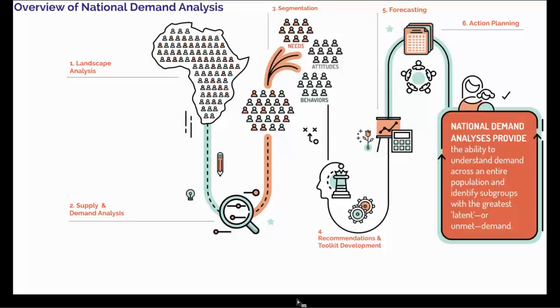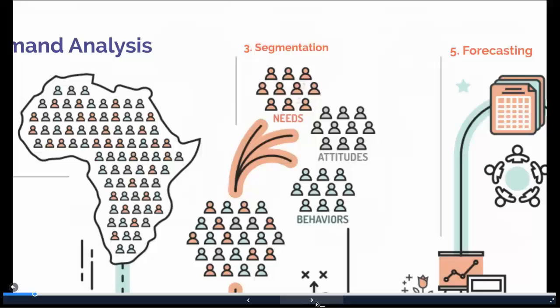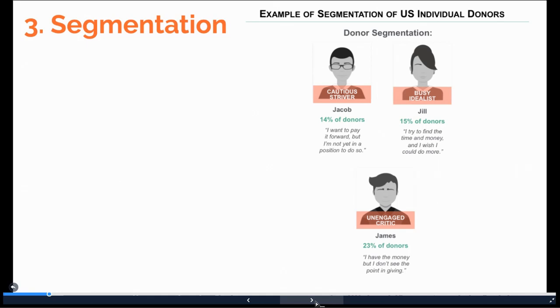To give you an example of this, let's look at a segmentation that Canberra conducted on a completely different topic: philanthropic effectiveness. We were engaged to understand how foundations and NGOs could encourage Americans to give more and give more effectively to charity, as the percentage of household income that Americans donate has remained stagnant since the 1970s. Here we see a subset of the segments that we found. Although their demographic profiles are very similar, their reasons for giving or not giving are very different.